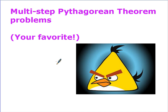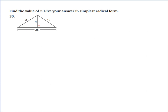Okay, now for multi-step problems. Find the value of X and give your answer in simplest radical form. We've got to figure out what X is, but this time I can't just say 9 squared plus 25 squared equals X squared, because this 25 goes with the whole triangle and we don't necessarily know how much is each part.